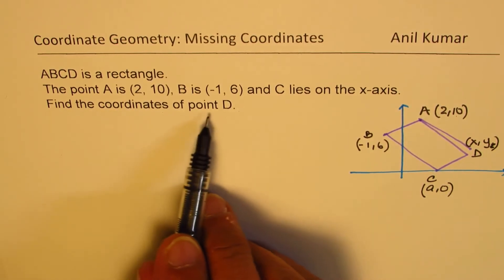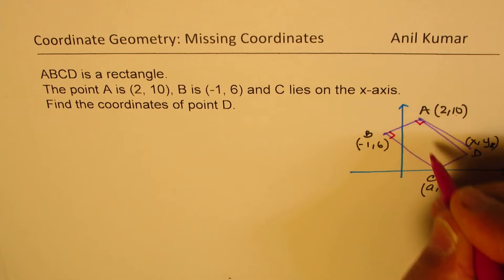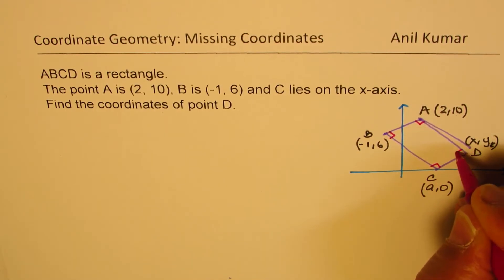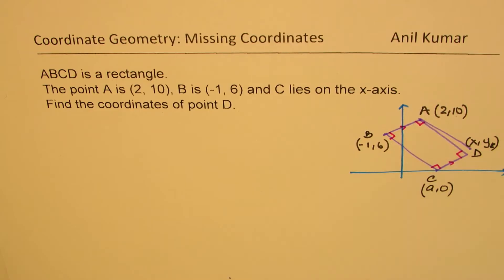We need to find coordinates of point D. We also know this is a rectangle, so all these are at right angles, and these are of course parallel. Now how do we find these coordinates? Let's first figure out what is C.